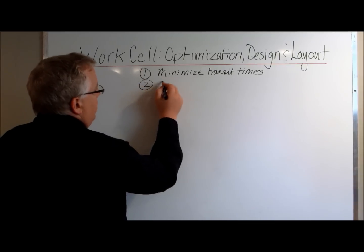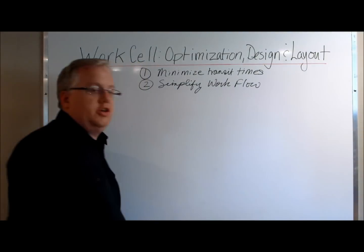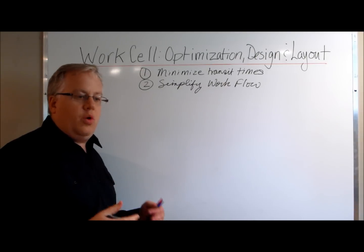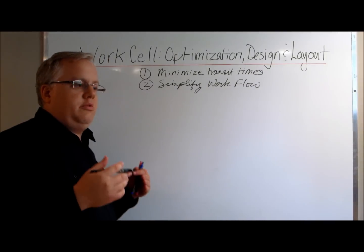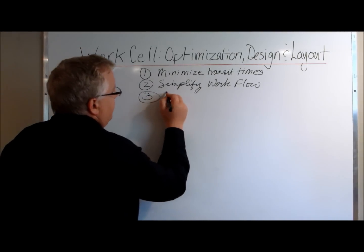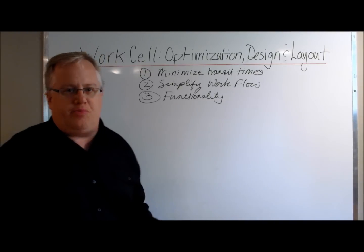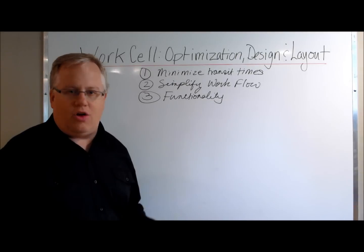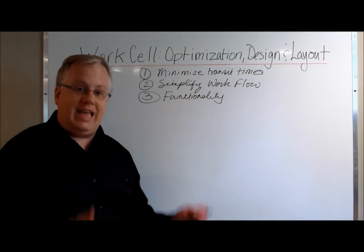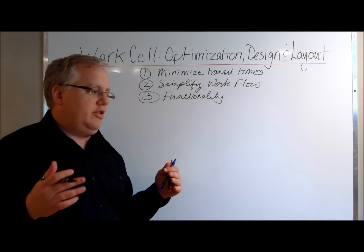The second aspect is to simplify workflow — you want work to move freely from one workstation to the next within the cell and from one cell to the next. Ignore the temptation to maximize space on your shop floor; you want operators to be able to move and pivot quickly from one machine to the next. The third point is functionality, which goes hand in hand with simplifying workflow — give operators enough space to do their jobs well.